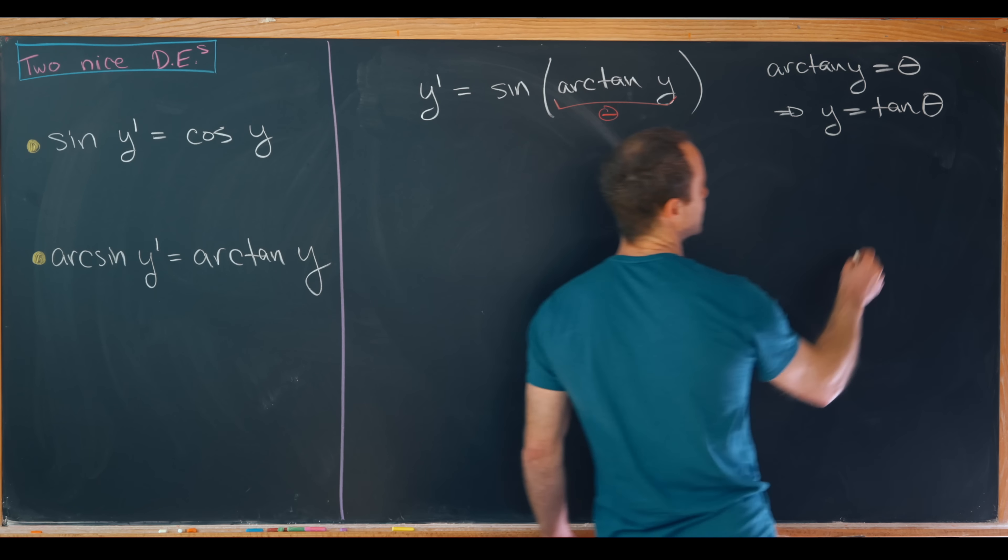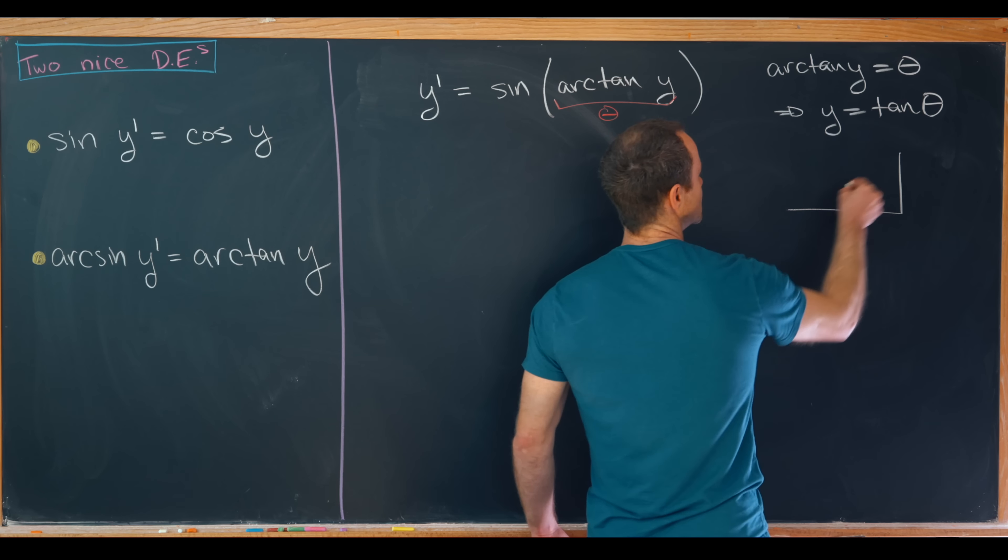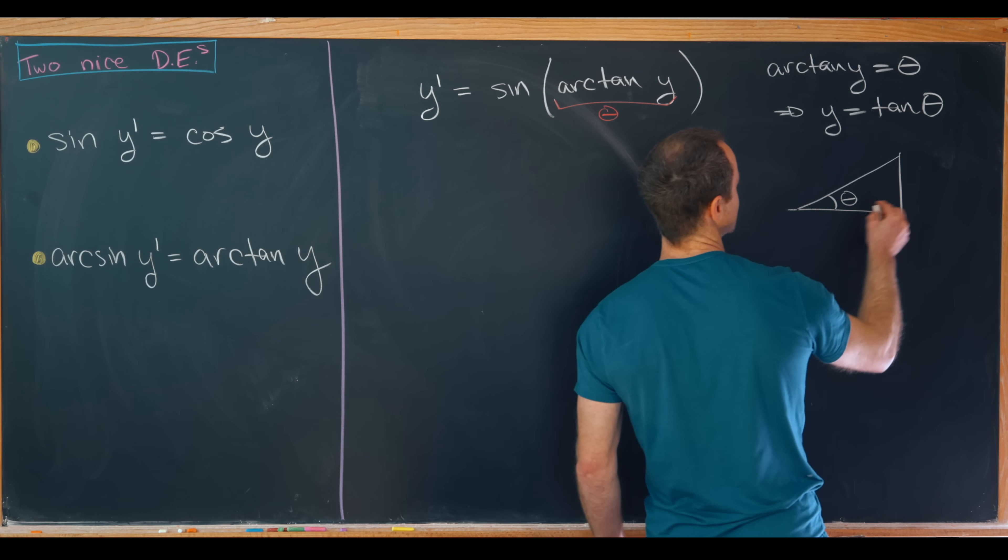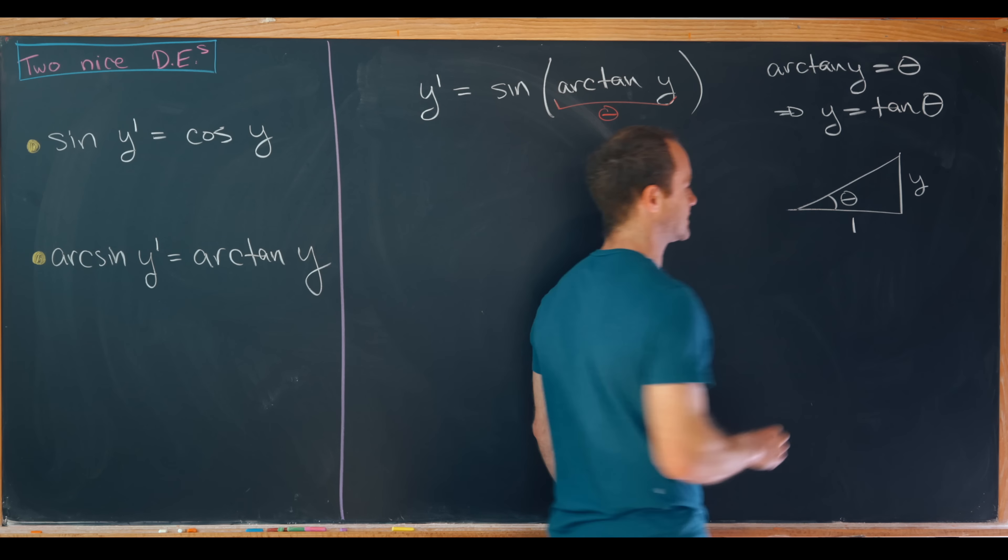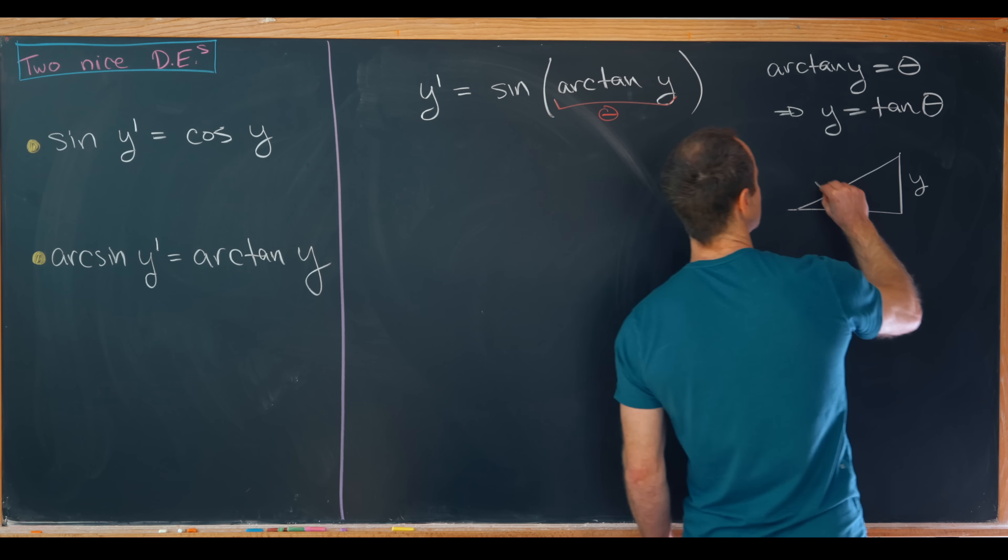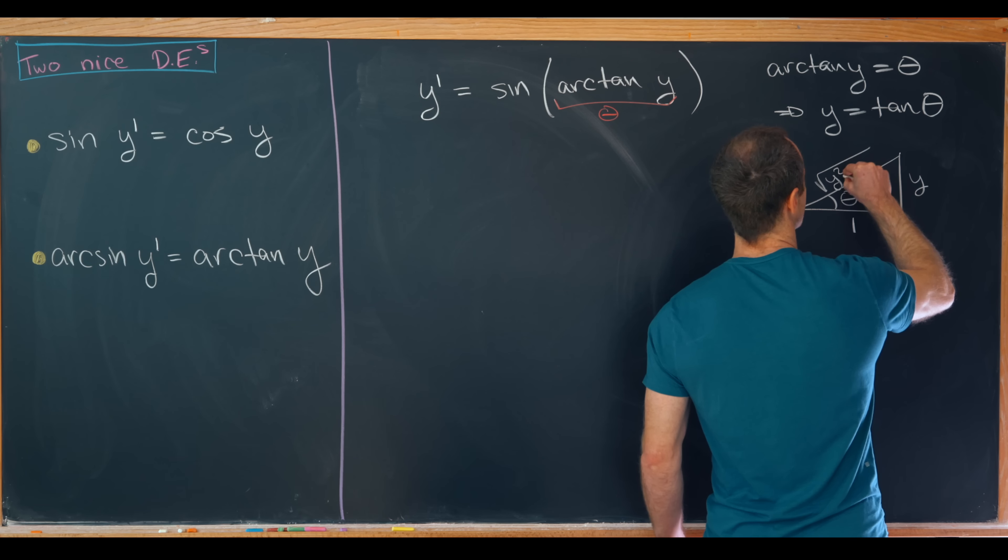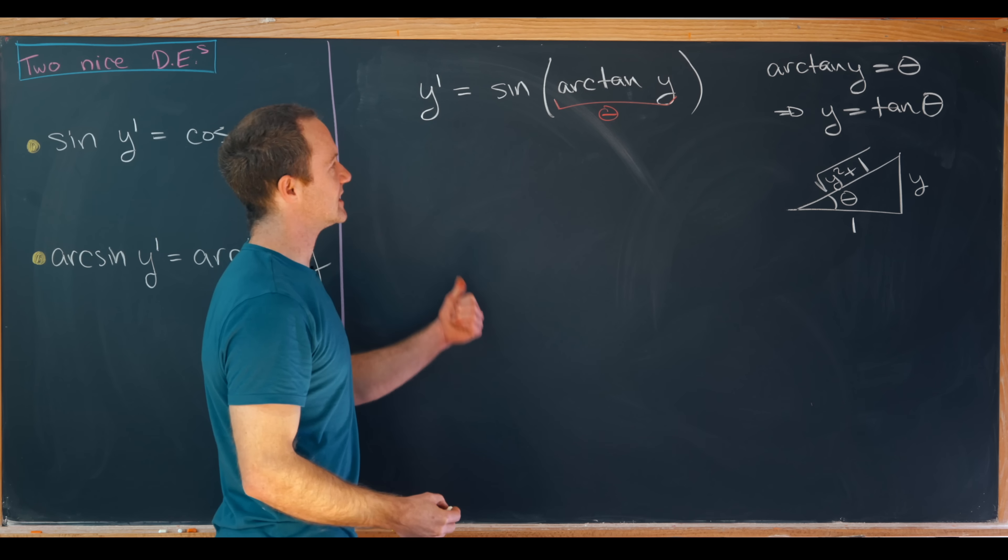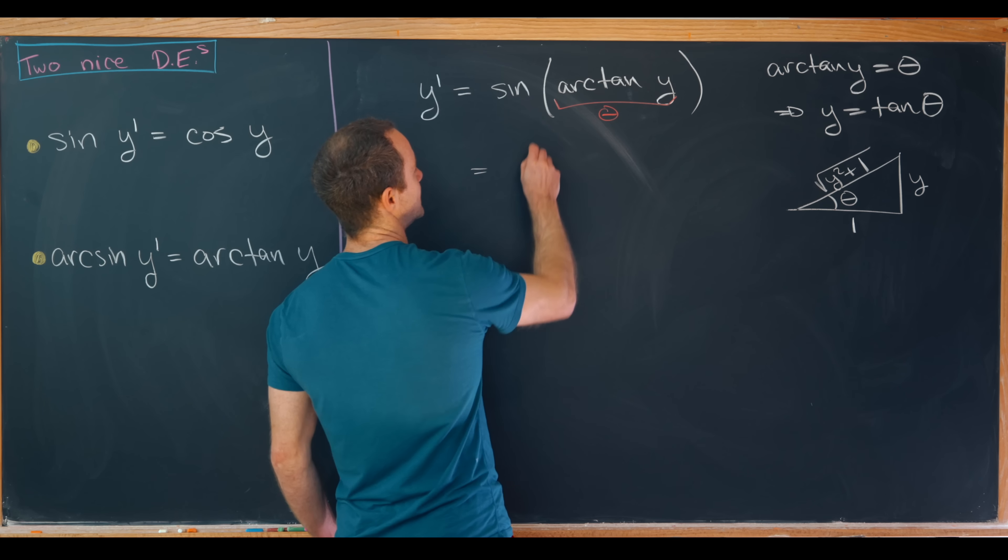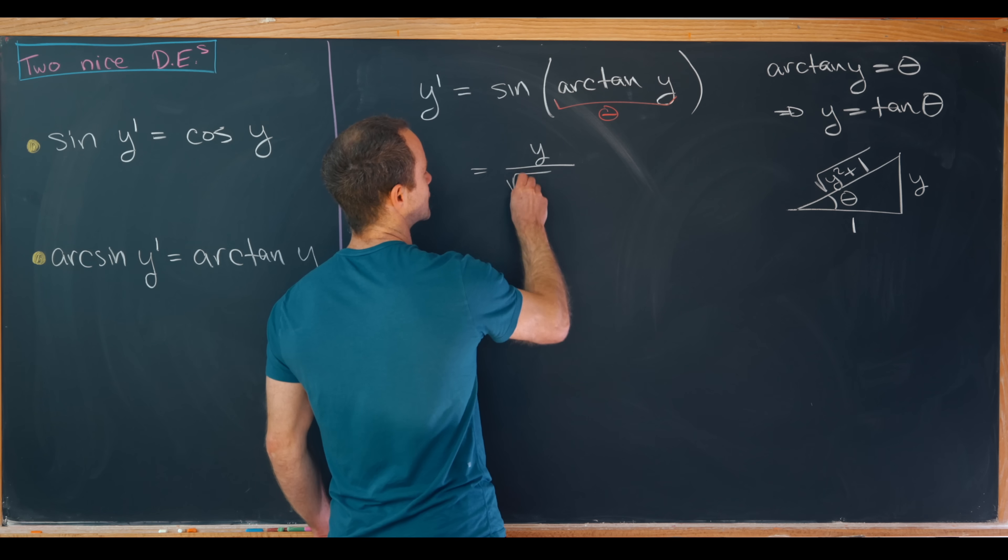Let's complete a triangle. So let's put our theta here. Tangent is opposite over adjacent, so we might as well scale that so it's y over 1. And then completing the hypotenuse we'll have y squared plus 1. But then sine is equal to opposite over hypotenuse. So this will be y over the square root of y squared plus 1.